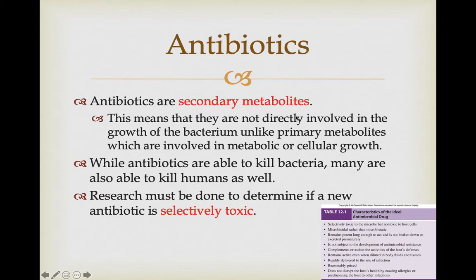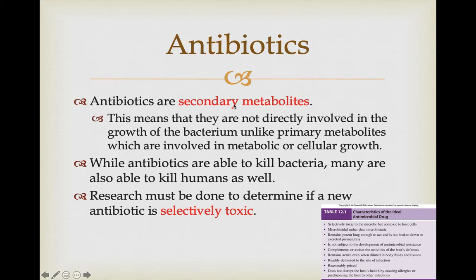Antibiotics are also termed a secondary metabolite, meaning they're not directly involved in the growth of that bacteria like a primary metabolite would be. Primary metabolites — carbon, nitrogen, glucose — are things bacteria must have to power their cells for day-to-day activities. A secondary metabolite is something cells will produce if they have the excess energy and resources to do so. You don't have to produce an antibiotic to survive — it's just nice if you can. If you've got excess resources to make one, you will. But they won't do it if they don't have extra resources.